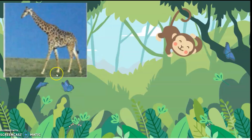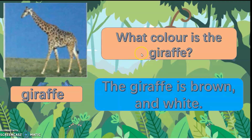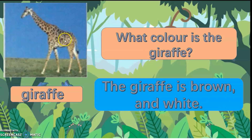What animal is this? It's a giraffe. What colour is the giraffe? The giraffe is brown and white. The spots are brown and the body is white.